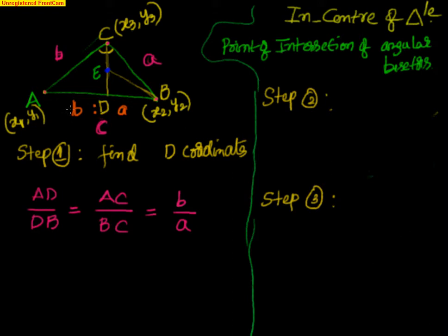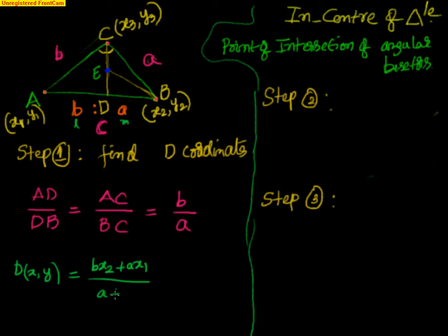I know the ratio, I know the coordinates, so I can find D straightforwardly by applying the section formula. The D coordinates (x, y) — instead of L and M it will be B and A — so it will be: (B·X2 + A·X1) / (A + B), comma (B·Y2 + A·Y1) / (A + B). This is the first step.